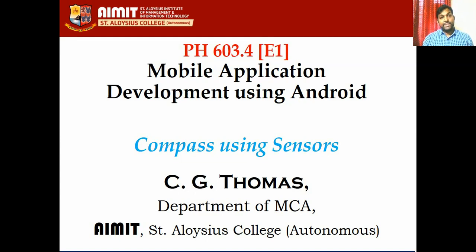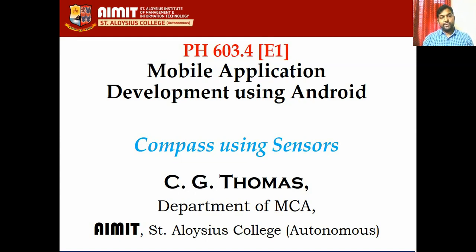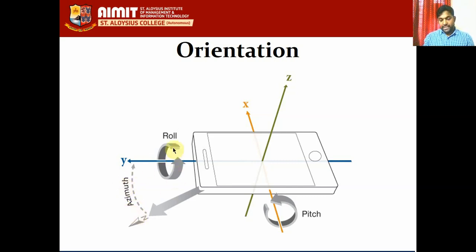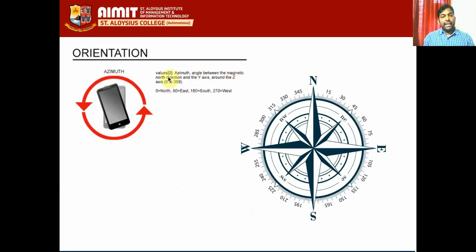Let me go to the prerequisites - what we need to know before we proceed. I want you to remember three keywords with respect to the orientation sensor. There is an X, a Y, and a Z. The rotation around the X axis is called pitch, the rotation around the Y axis is called roll, and the rotation around the Z axis with orientation towards Y and Z is called azimuth. Azimuth gives the angle between the magnetic north direction and the Y axis around the Z axis.